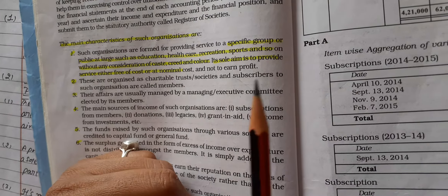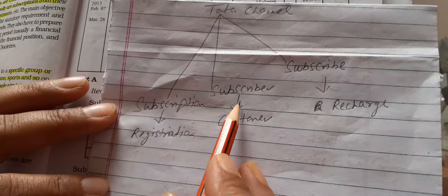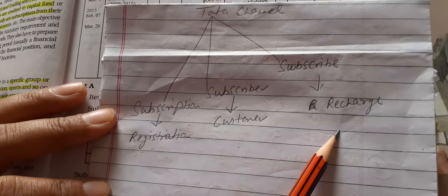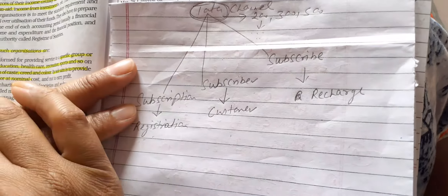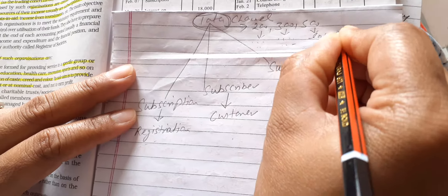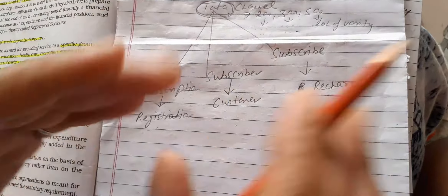Let me explain with an example. Tata Sky is a channel that works in three ways. Subscribe means registration or enrollment. Subscriber means customer. Subscription means recharge. When you have Tata Sky, there are different subscription tiers: 200 per month gives limited 3–4 channels, 300 per month gives up to 10 channels, and 500 per month gives access to many channels. You choose the category that fits your budget.